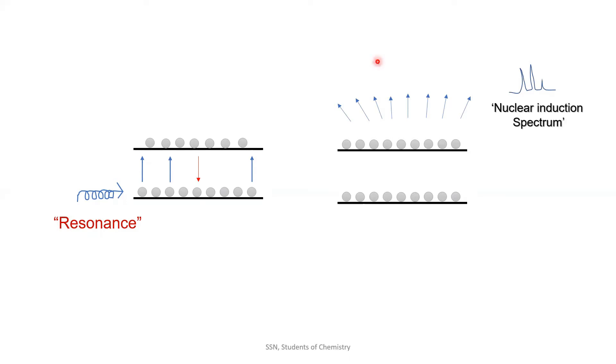From our previous classes, we have understood that if we apply the resonance phenomena, that is, if we pass a radio frequency wave in a frequency equal to the Larmor frequency, then the nucleus spins can be excited from the lower energy state to the higher energy state.